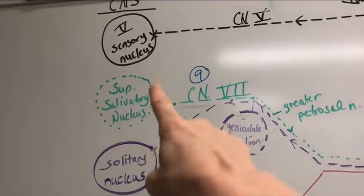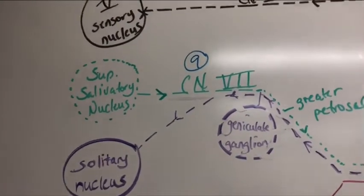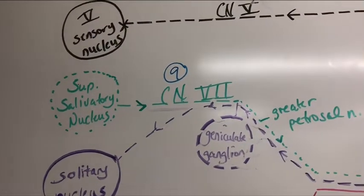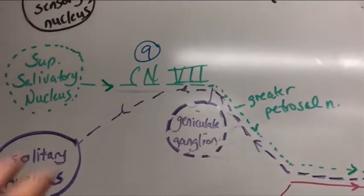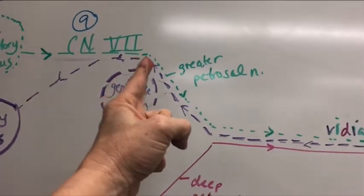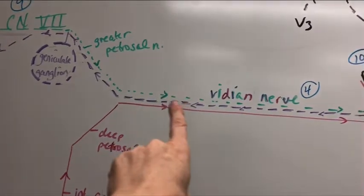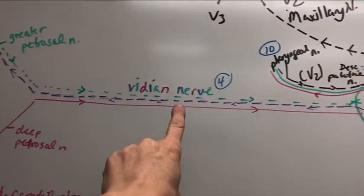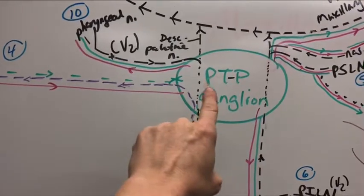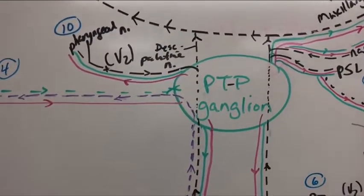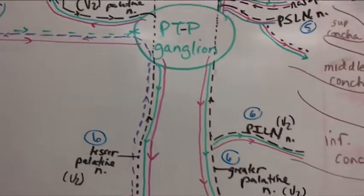At the caudal pons there is a superior salivatory nucleus. All sympathetics and parasympathetics start on a nucleus. The dotted line travels on cranial nerve seven. These hitchhiking preganglionic parasympathetics travel on seven, which gives off the greater petrosal nerve. Greater petrosal joins with deep petrosal to form the vidian nerve. The preganglionic parasympathetics travel on the vidian nerve through the pterygoid canal to synapse on the pterygopalatine ganglion in the pterygopalatine fossa. We synapse here, and then V2 branches carry postganglionic parasympathetics to their sites.